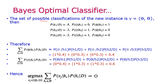The possible classification of the new instance is either positive or negative. P(h1 | D) = 0.4 and h1 is positively classified, so P(positive | h1) = 1 and P(negative | h1) = 0. P(h2 | D) = 0.3 and h2 is negatively classified, so P(negative | h2) = 1 and P(positive | h2) = 0. Similarly, P(h3 | D) = 0.3 and h3 is also negative, so P(negative | h3) = 1 and P(positive | h3) = 0.